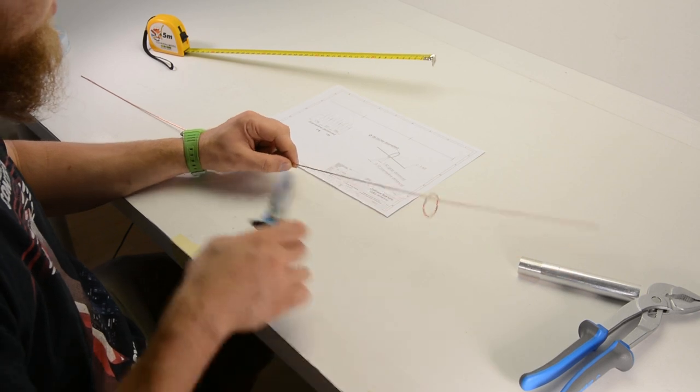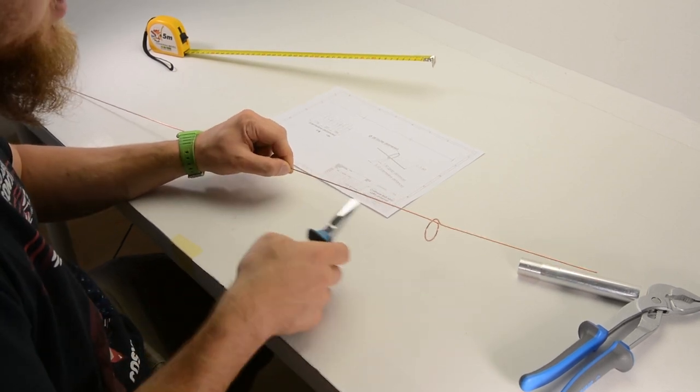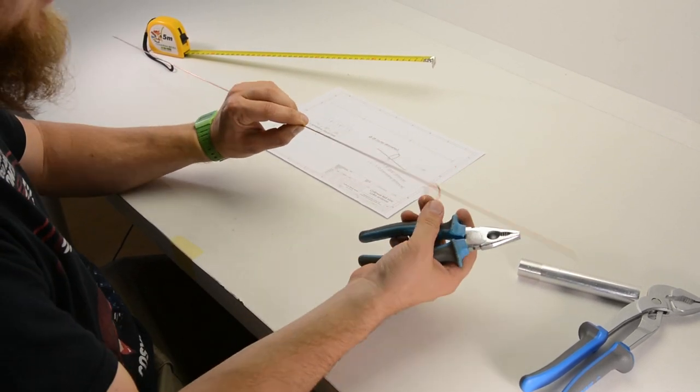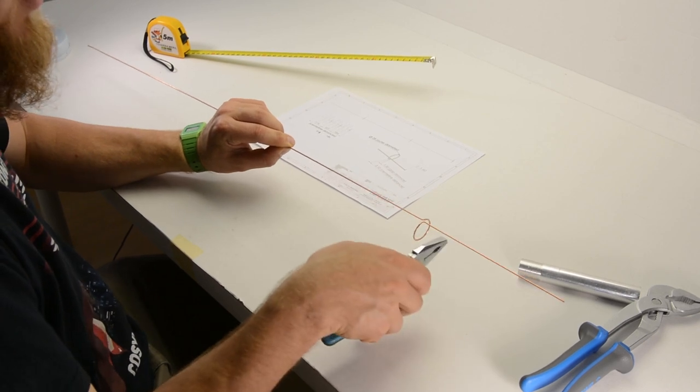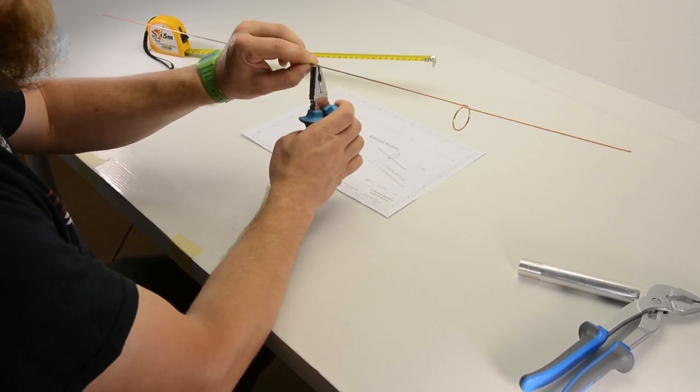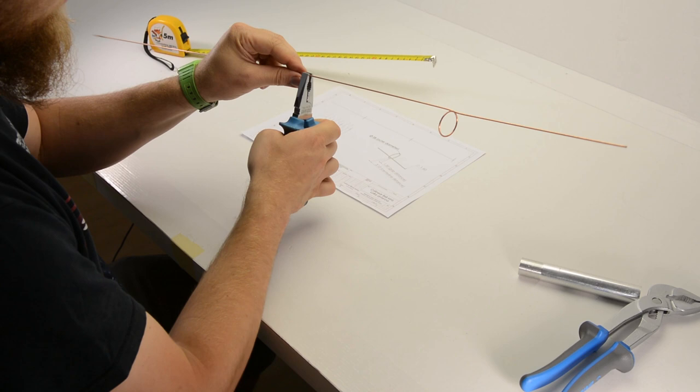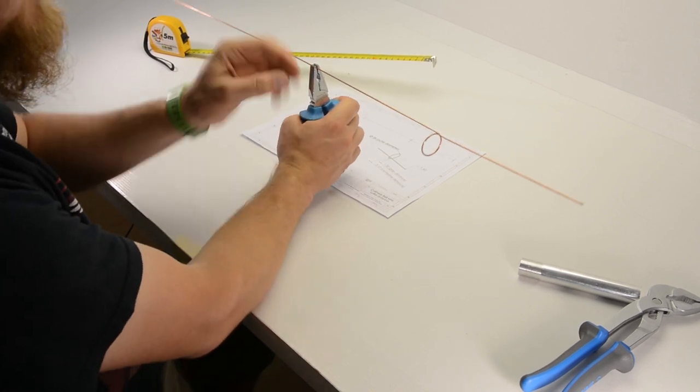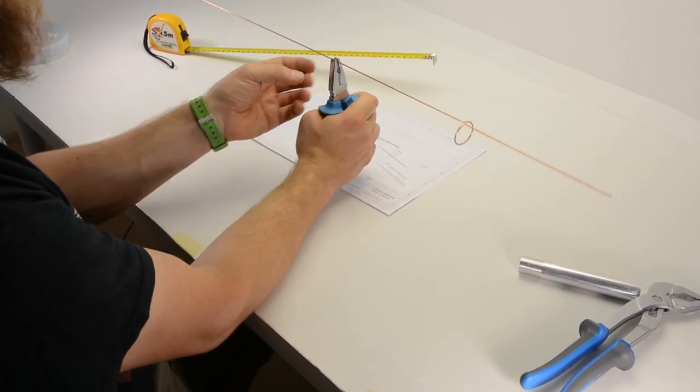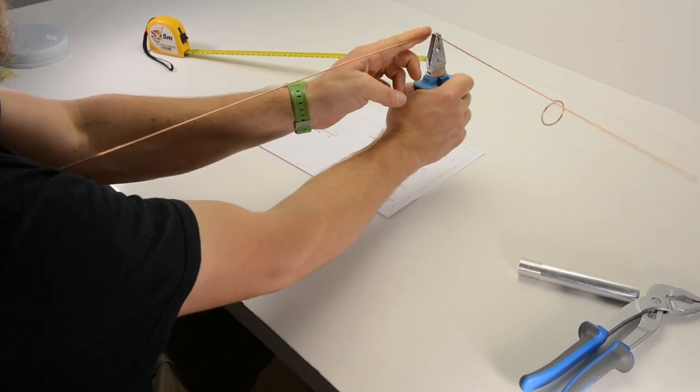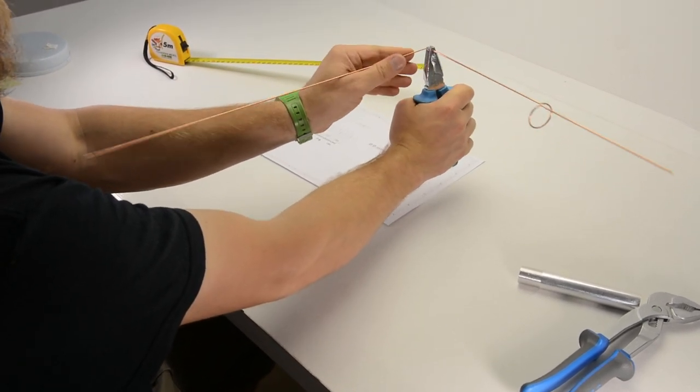So we take the wire where we have marked the distance and we do another 90 degree bend which needs to be aligned with this one. So what's easiest to do is take the wire here, make sure the loop is pointing downwards and then just rotate the wire towards yourself into a 90 degree bend.